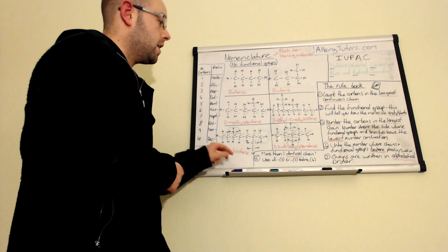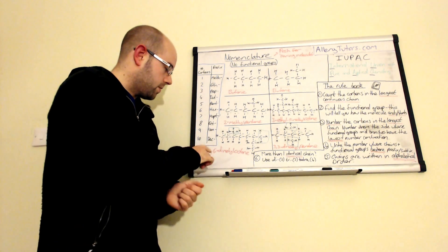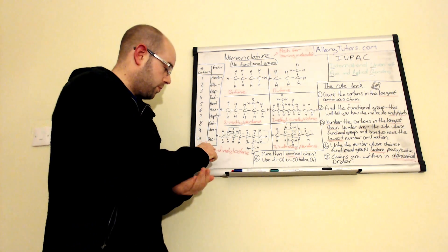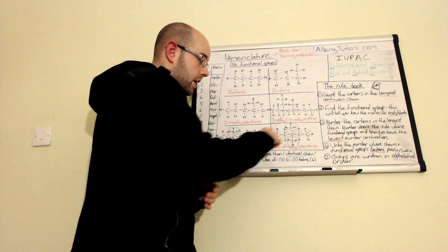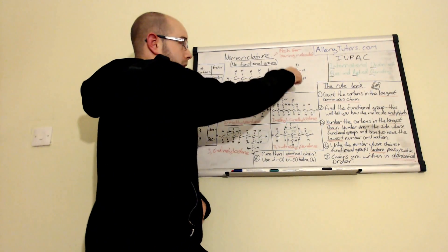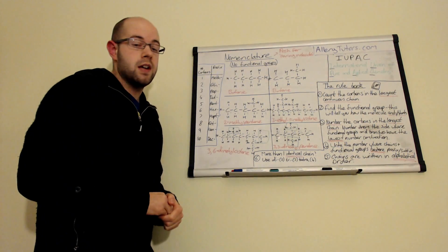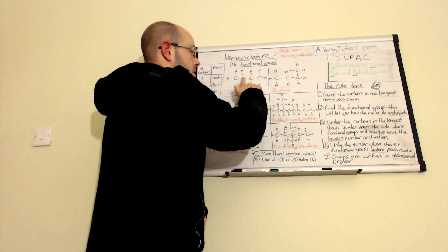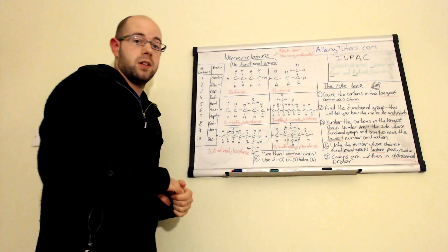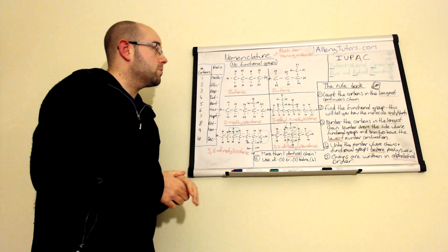That's basically how you name molecules with no functional groups. Things to take away: separate numbers with a comma, separate numbers and letters with a hyphen, and everything else is just one word - one big long word. Watch out for molecules that may look different but are actually the same thing. The key is always to find the longest continuous chain - start your finger, run it along continuously, and count the carbons without taking your finger off the page or going backwards. Once you've got that, it's not too bad from that point. Hope that helps - bye!